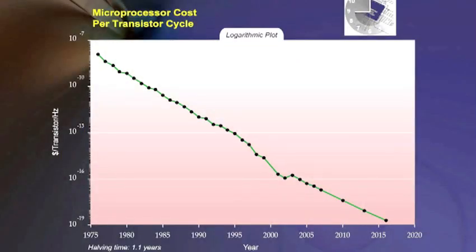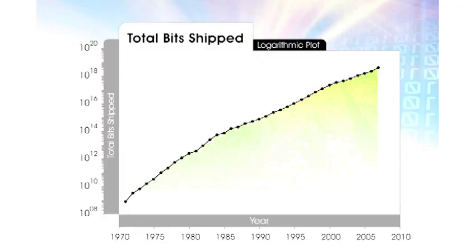I've been making these forward-looking predictions for about 30 years. The cost of a transistor cycle — a measure of the price performance of electronics — comes down about every year. That's a 50% deflation rate, and it's also true of other examples, like DNA data or brain data. But we more than make up for that. We actually ship more than twice as much of every form of information technology. We've had 18% growth in constant dollars in every form of information technology for the last half century, despite the fact that you can get twice as much of it each year.